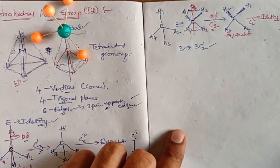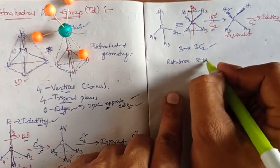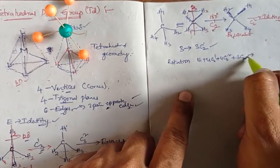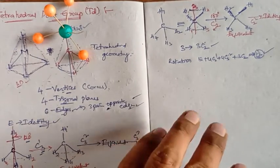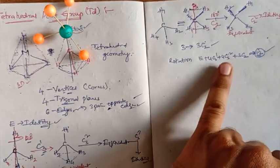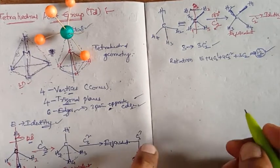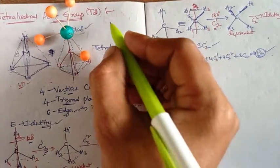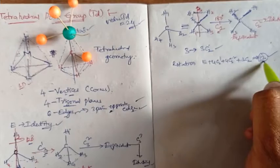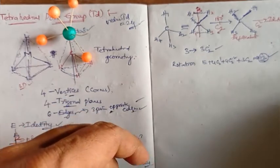Summarizing the rotational axes in tetrahedral: E (identity), four C3¹, four C3², and three C2 — totaling 12 rotational operations. There are no more rotational axes in the tetrahedral geometry: only the third-fold (C3) giving eight operations and three second-fold (C2) axes, making 12 total.